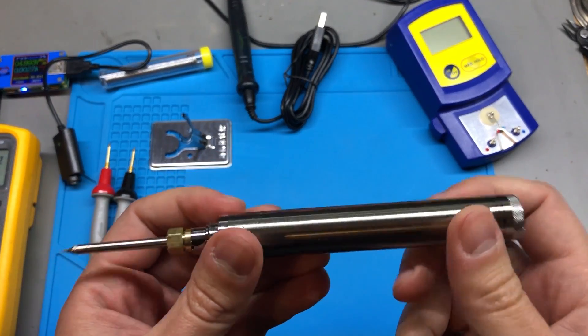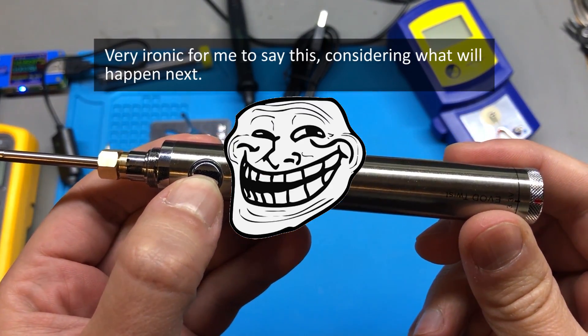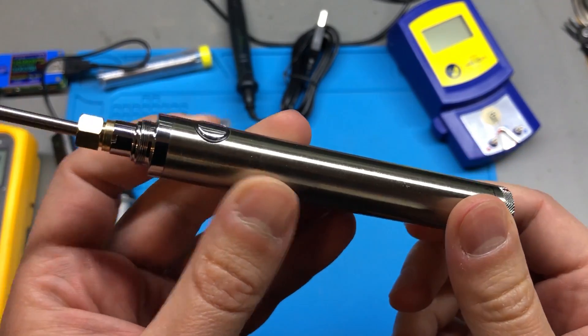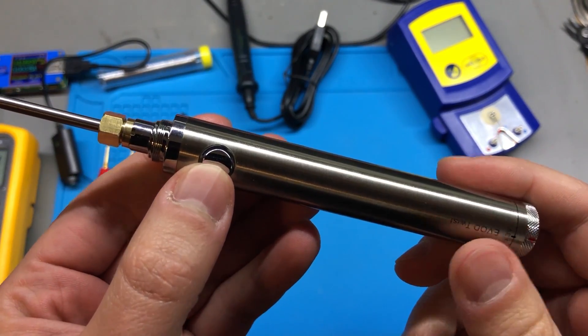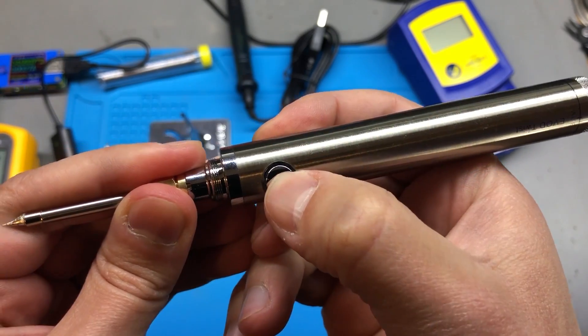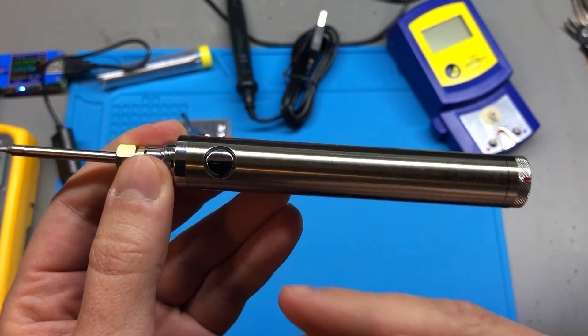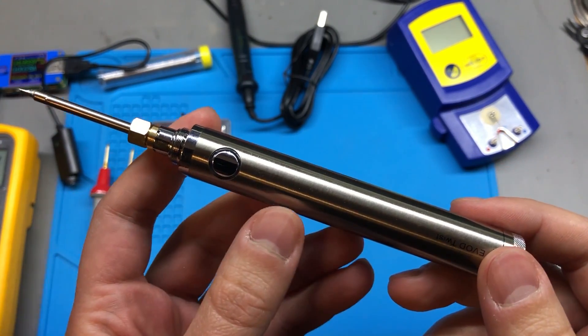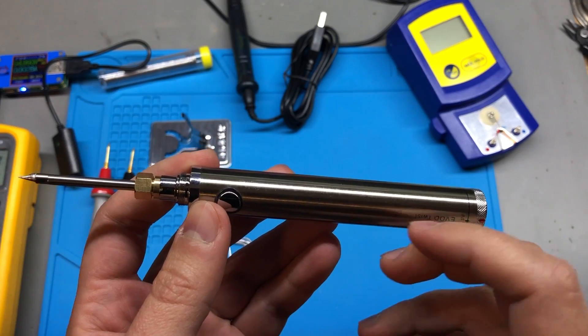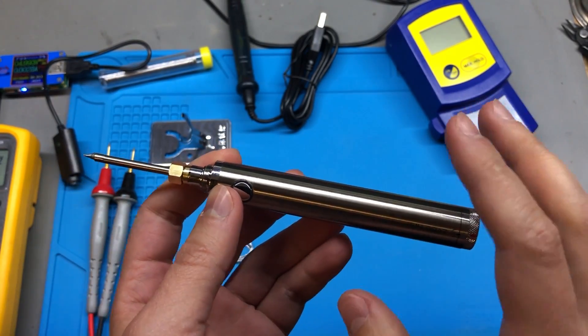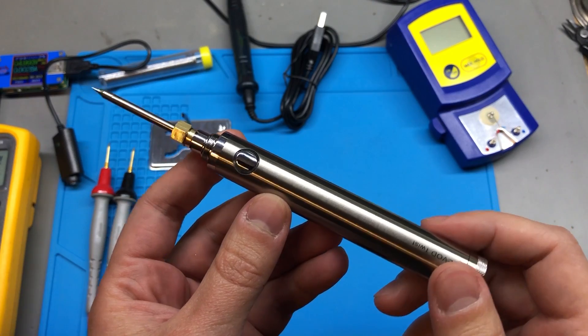When you first turn this on you might think you've got a faulty unit because it's not responding when pushing the switch. Well that is a protection feature, you need to press it 5 times to enable the iron. And then there is an additional safety timeout of 10 seconds, it doesn't matter how long you keep the switch pressed, it will cut power after 10 seconds. That might be annoying, I would have liked a way to disable that timeout or increase it.